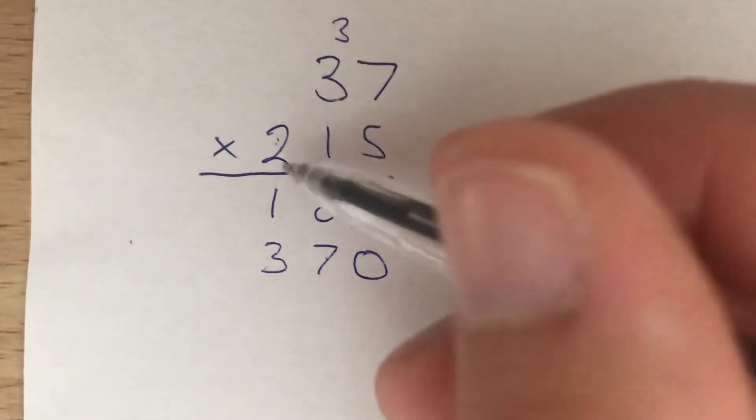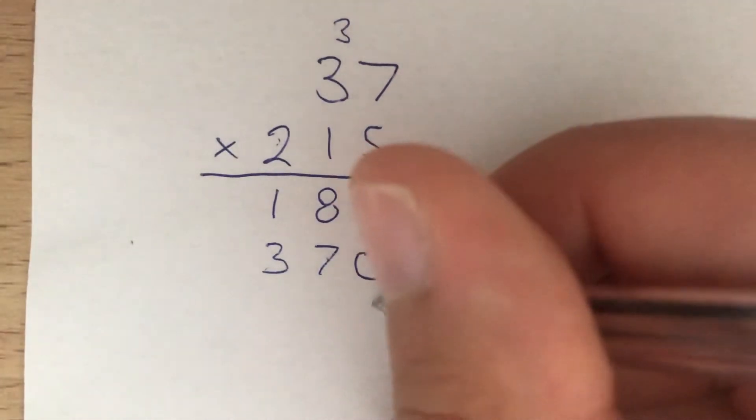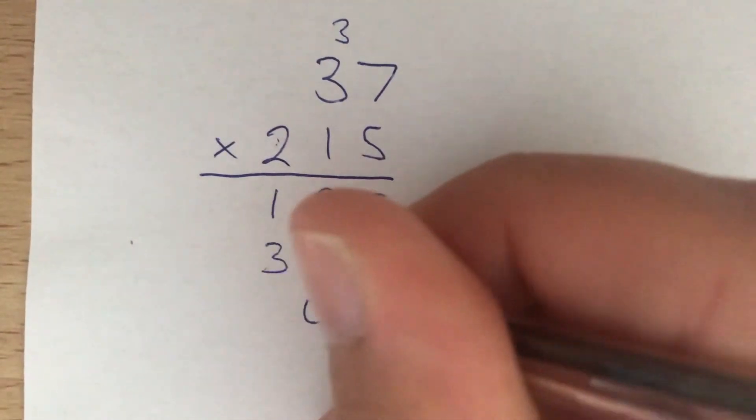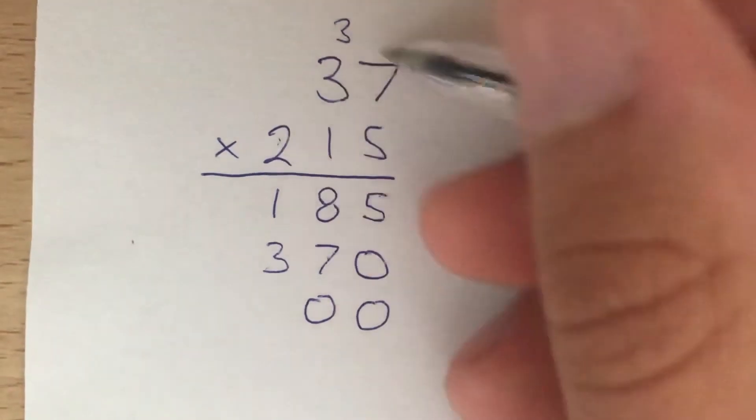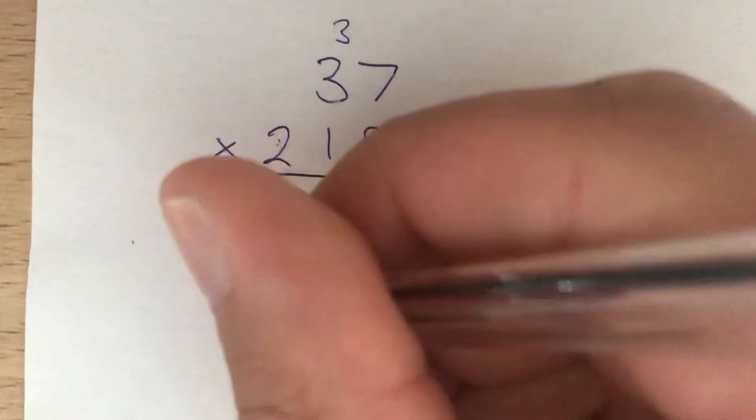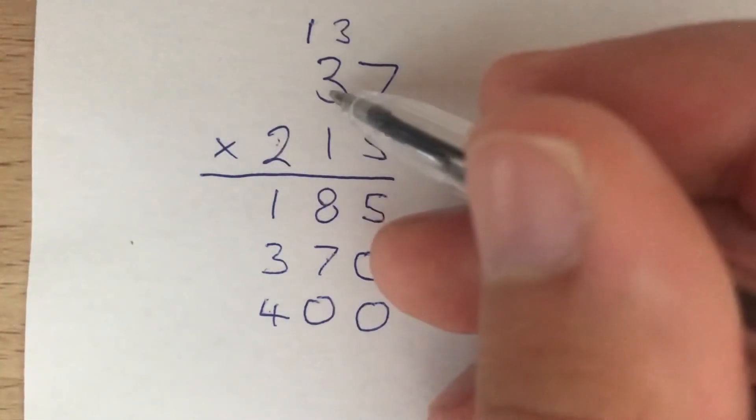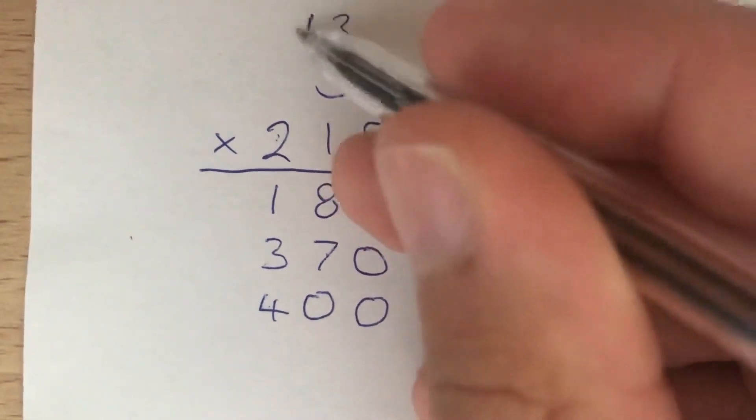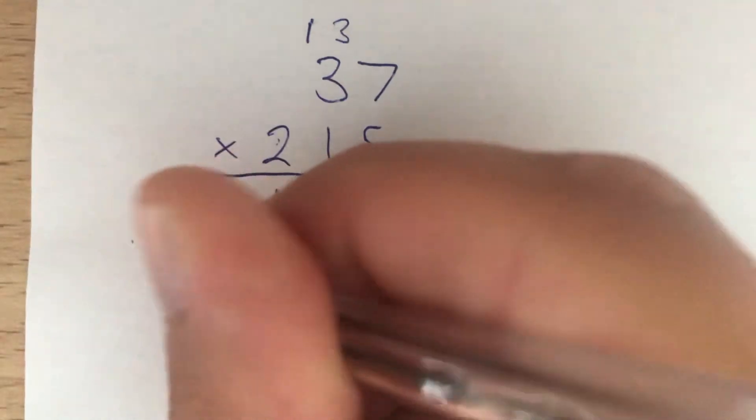Now onto our third row. We're going to multiply by this 2, but remember it's not a 2, it's 200. So we put in 2 placeholder 0s. Now we multiply 2 by 37. 2 times 7 gives us 14, so we put the 4 down and carry the 1. 2 times 3 gives us 6, and we add the carried 1 to get 7.